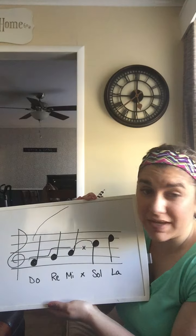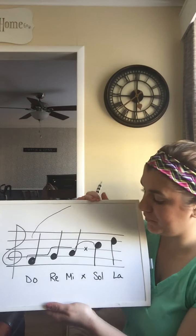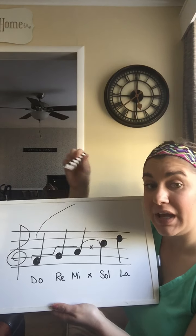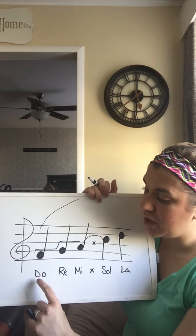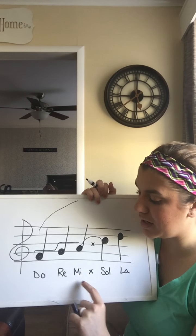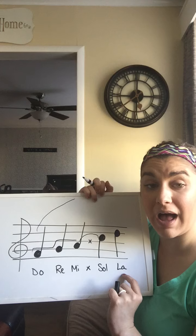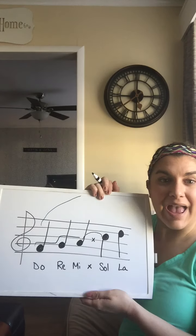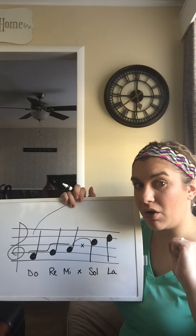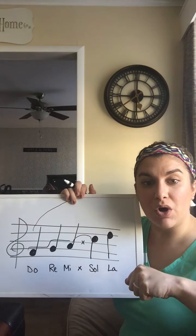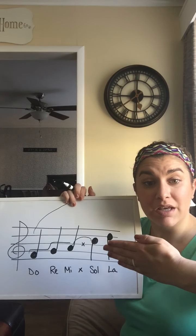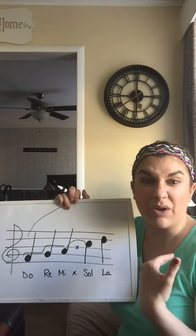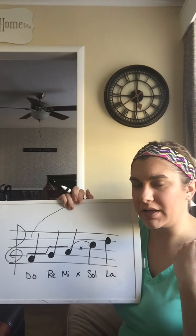Mi and Sol are not neighbors — I have to skip a spot. But Sol does have another neighbor we know, one step higher, and that's La. Now if I were to sing this, it sounds like this: Do, Re, Mi, Sol, La. Listen close — I'm going to do that again. Watch how I use my hand signs and listen to how my voice gets higher as I go higher: Do, Re, Mi, Sol, La. The hand signs help us remember how to sing those and put an image in our brain as well.